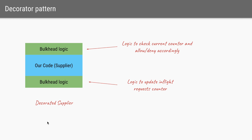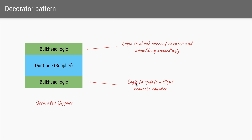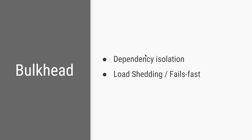The decorate supplier is a simple wrapper that decorates our code with bulkhead logic to update the in-flight request counter and to allow or deny requests to the remote service based on the current counter. So that's the bulkhead pattern — it allows us to isolate dependencies and avoid exhausting our thread pool through the concept of load shedding or failing fast. That's it for this video — thanks a lot for watching and see you in the next one!